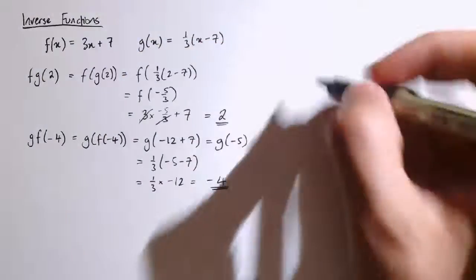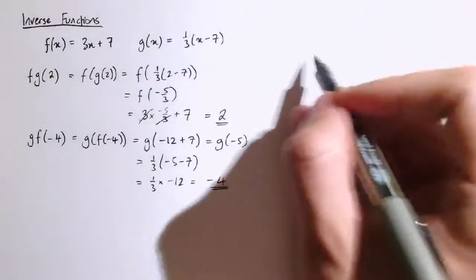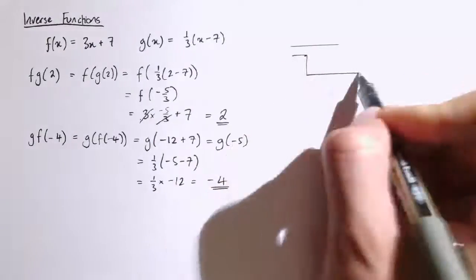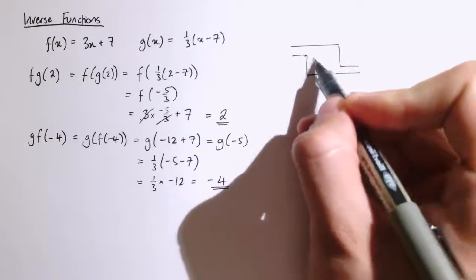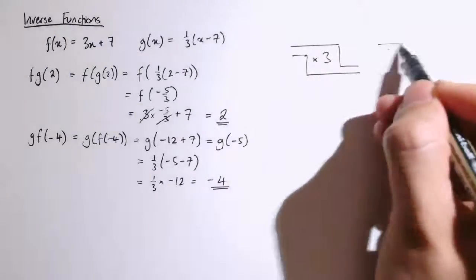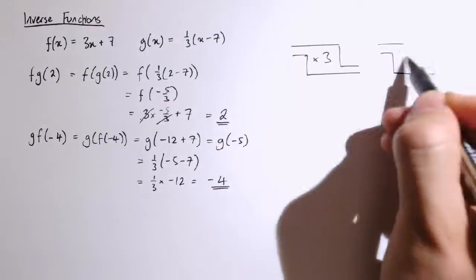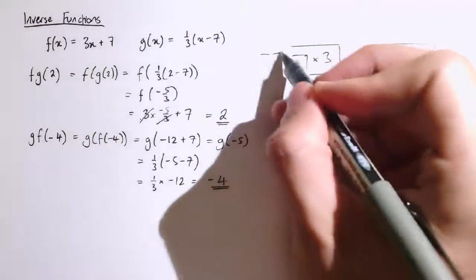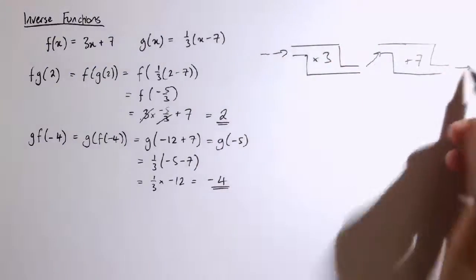Well, f of x is 3x plus 7, so it's sort of like the composition of two functions, where the first function is timesing by 3, and the second one is adding 7. Let me just put things through these two machines sequentially.